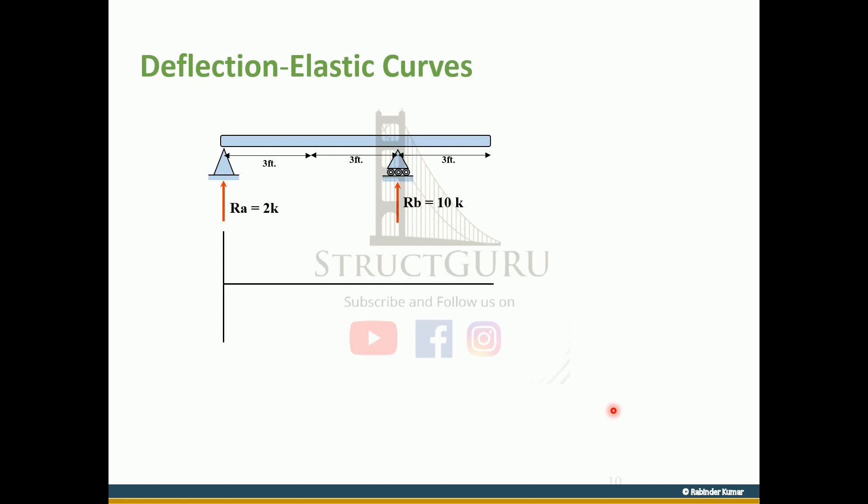Here is another example for overhanging beam. The bending moment diagram with respect to the loading will be formed in this manner, and elastic curve will be drawn. For positive, it will be like this, and for negative portion, it will be like this. And since it is a free end, it will be having the maximum deflection. That's how the elastic curve is formed.